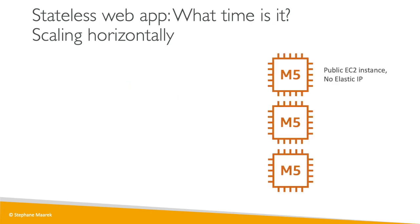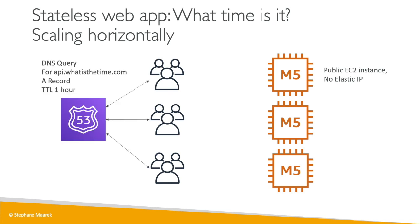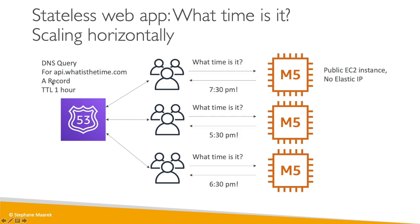Let's change the approach. We have three M5 EC2 instances and let's remove elastic IPs — there are only five elastic IPs per region per account by default, so it's not a lot. Instead, our users will leverage Route 53. We set up Route 53 with the URL api.whatatime.com as an A record with a TTL of one hour. An A record maps a DNS name to a list of IPs. Users query Route 53, get the IP addresses of our EC2 instances, and Route 53 keeps them in sync. We no longer have any elastic IPs to manage.